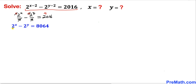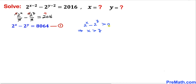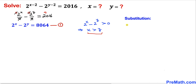This whole original equation has been transformed to this new equation — let's call it equation number one. Now let's make some observations. Since the difference of these two numbers equals a positive number, we have 2 power x minus 2 power y is greater than 0, which means x is greater than y.